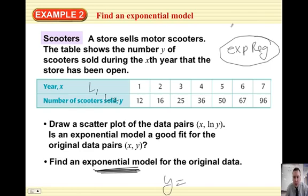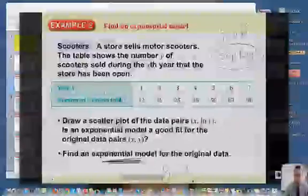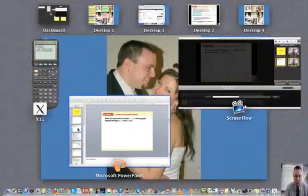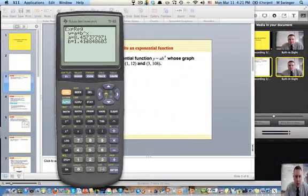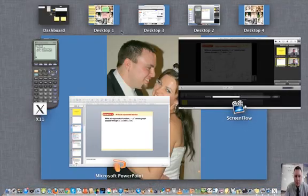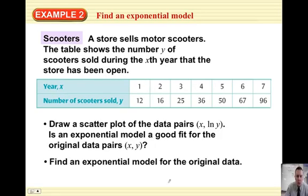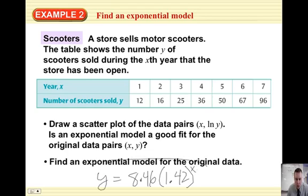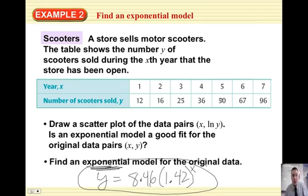Y equals exponential Y equals A times B to the X. A, it told us eight point something. Right here. Eight point four six. Because we're going to round. And one point four two. Eight point four six, one point four two. Okay, remember this. Eight point four six. One away. Eight point four six and one point four two to the power of X. So, Y equals this function. Here's your exponential model. Okay? Just type it in the calculator.